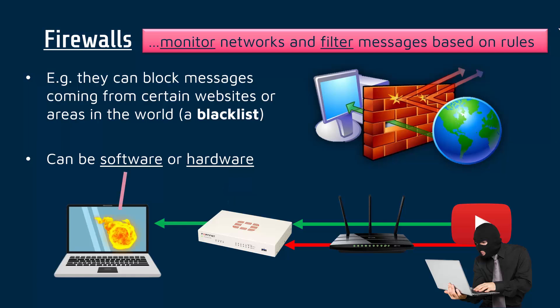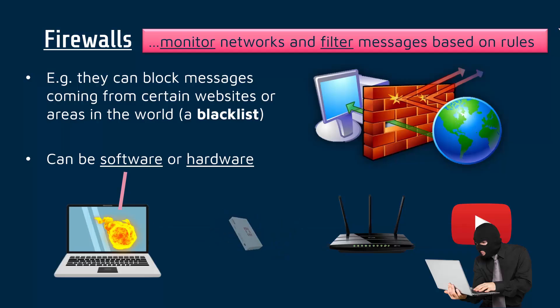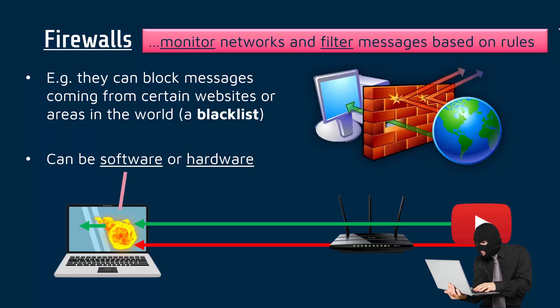A software firewall is actually more common — it's just a program on your computer, often built into antivirus software or your operating system. If our firewall is software-only, it's running on our computer. This can be an issue: the attacker effectively reaches your computer before being blocked. If the firewall is doing its job properly it won't be able to do much, but personally it's uncomfortable having an attacker able to reach your computer. Ideally it would never get close, which is why a hardware firewall can be a slightly safer bet, although they tend to be more expensive and harder to set up.